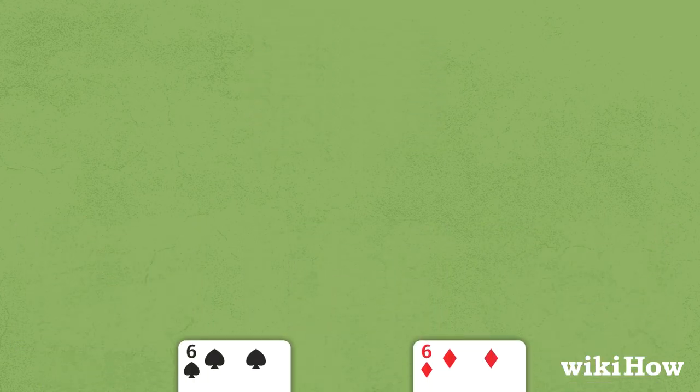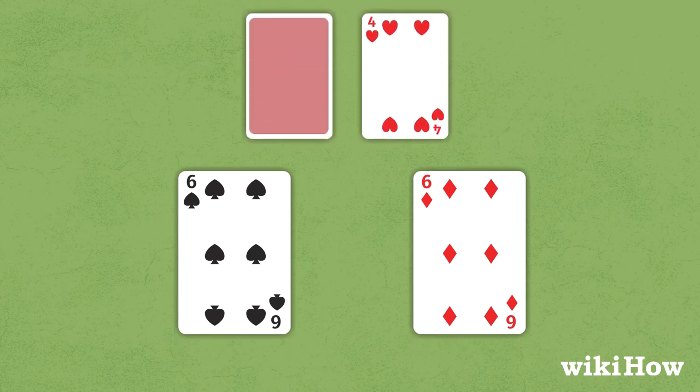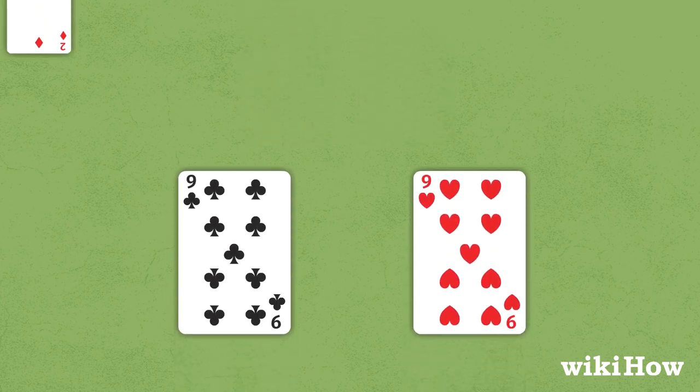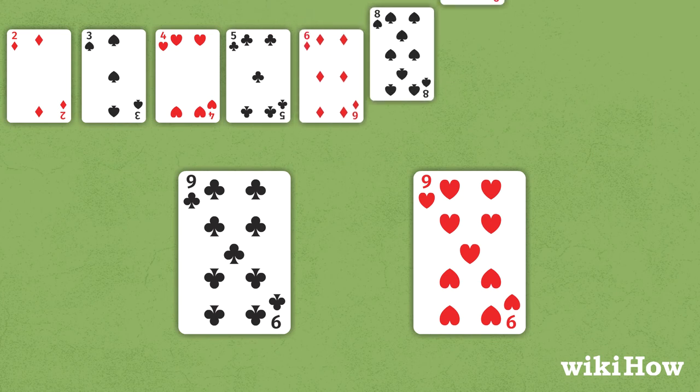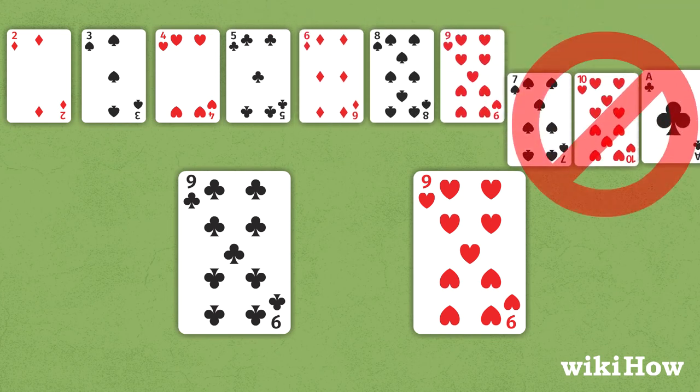Similarly, it's best to split 6s if the dealer shows a 2 through 6, but not if they have a 7 or higher. Split 9s if the dealer has a 2 through 6, an 8, or a 9, but not if they have a 7, a 10, or an ace.